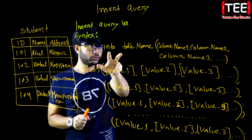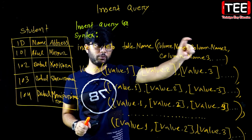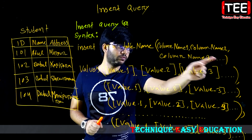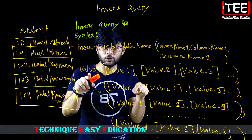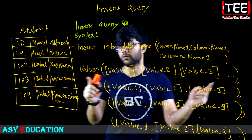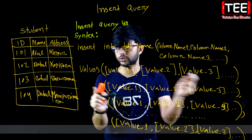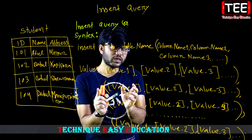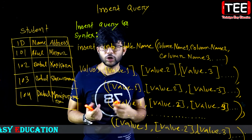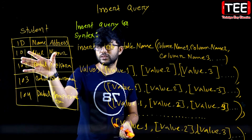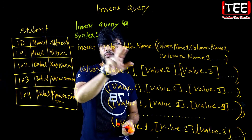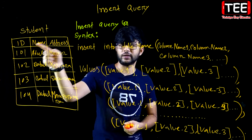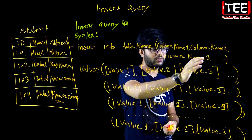INSERT INTO table name, then column name one, second column name, third column name — open and close parenthesis. Then VALUES — what values should you provide? We write specific data. If you want to insert this record, what is the record? INSERT INTO student table — what is the column name? The student table columns are listed and then we close the parenthesis.